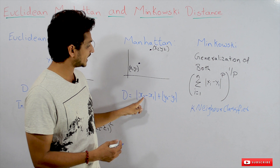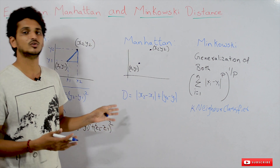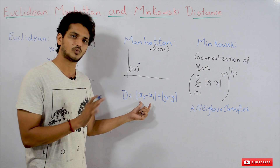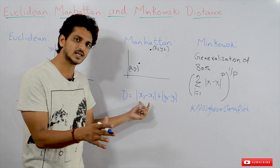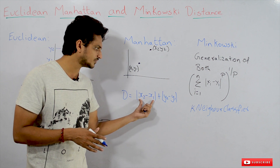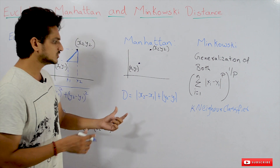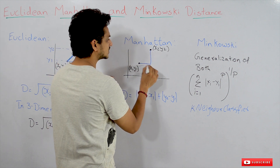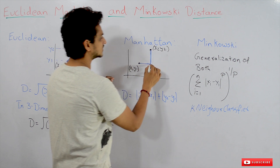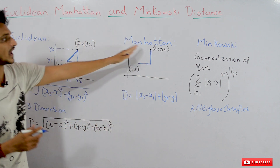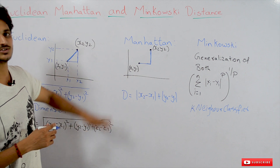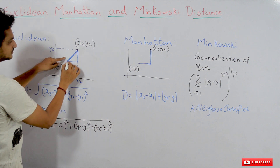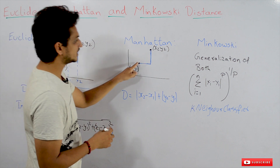Coming to Manhattan distance: d equals the absolute value of (x2 minus x1) plus the absolute value of (y2 minus y1). The absolute value means even if the result is negative, we consider it as positive — we don't consider the sign. So Manhattan distance is the sum of the horizontal distance and vertical distance, whereas Euclidean distance calculates the minimum straight-line distance between the two points.